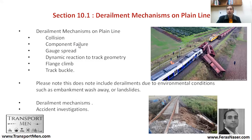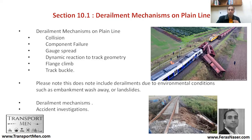Another type of derailment on a plane line is component failures, where one of the components of the train has failed and resulted in a derailment. Gauge spread is also a cause — if the track geometry is not in good condition, the distance between the two rails, called the gauge, can exceed the standard gauge of 1435 millimeters, resulting in derailment. Poor track conditions such as cyclic top faults or a rail break can also result in derailment.